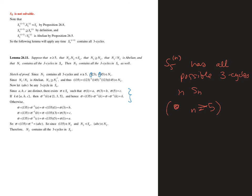If we take the conjugate by sigma of the three-cycle (1 3 5), we get that the permutation takes a to b, b to c, and c to a, while anything else is fixed. Here we're using that our commutator subgroups are normal in the group that they're the commutator subgroup for.